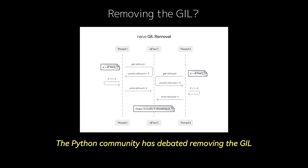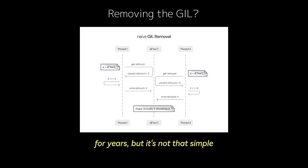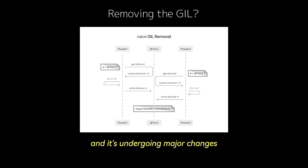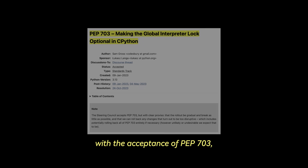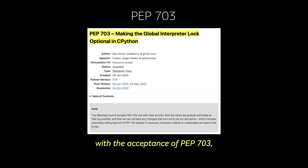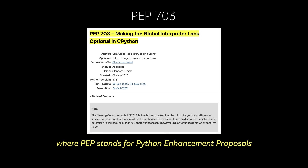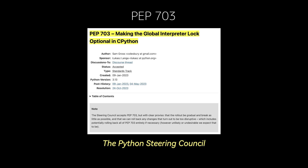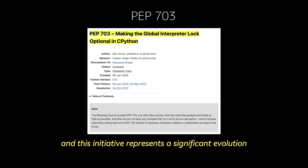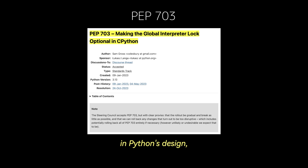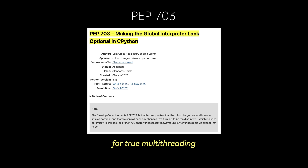The Python community has debated removing the GIL for years, but it's not that simple. The GIL is a well-known feature and limitation of CPython, and it's undergoing major changes. With the acceptance of PEP 703 — where PEP stands for Python Enhancement Proposals — the Python Steering Council has decided to make the GIL optional. This initiative represents a significant evolution in Python's design, which opens up new opportunities for true multi-threading.